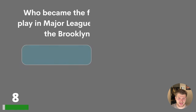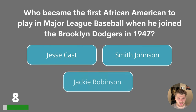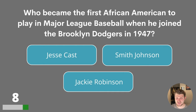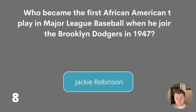Question eight. Who became the first African American to play in Major League Baseball when he joined the Brooklyn Dodgers in 1947? Jesse Kast, Smith Johnson or Jackie Robinson? The answer is Jackie Robinson.